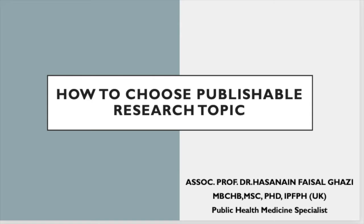Hello everyone, welcome to today's video. Today we'll talk about one of the most important things for any researcher: how to choose a publishable research topic. Before you start your research you need to determine your topic and title, and the aim of any researcher is to publish their findings — whether as a manuscript, paper, article, or conference presentation.